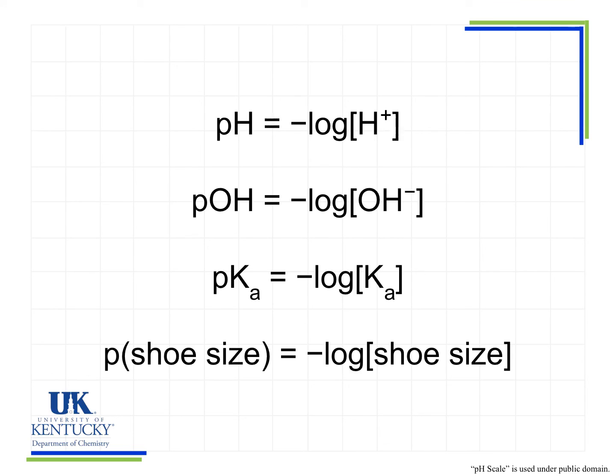All of the problems we looked at here were dealing with pH and H plus concentrations. However, we can use the same expression with other variables. We have pH equals the negative log of H plus, we can also have pOH equals the negative log of OH minus. We'll talk about pKa later, which equals negative log of Ka. Any time I put the p in front of a value, it simply means take the negative log of that number. So p means just take the negative log of a number.